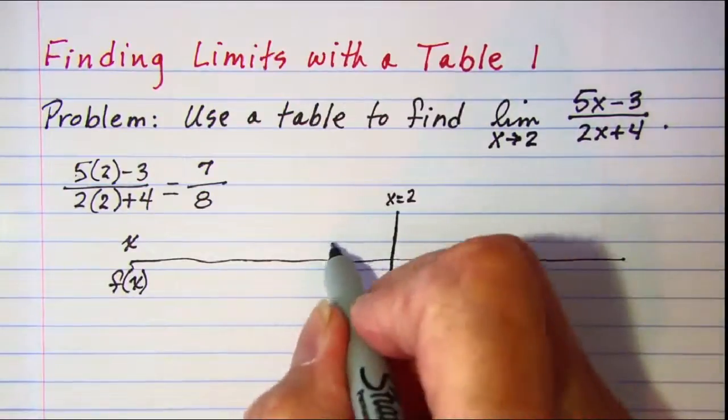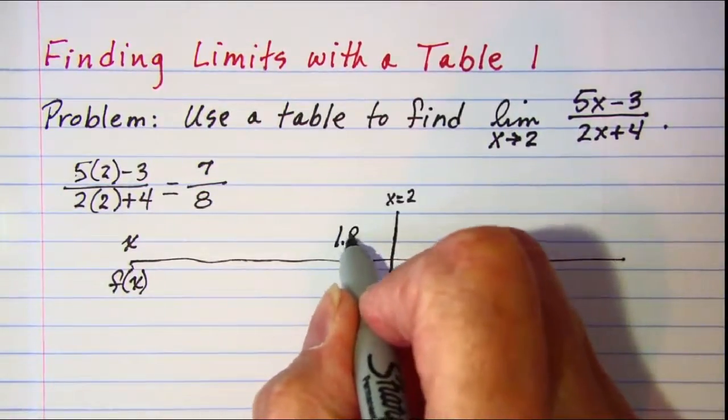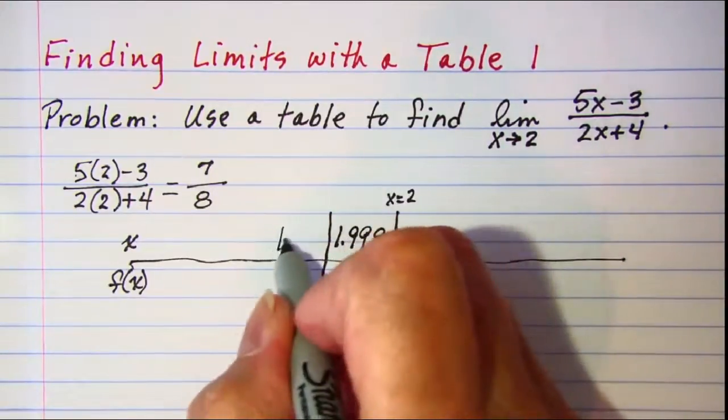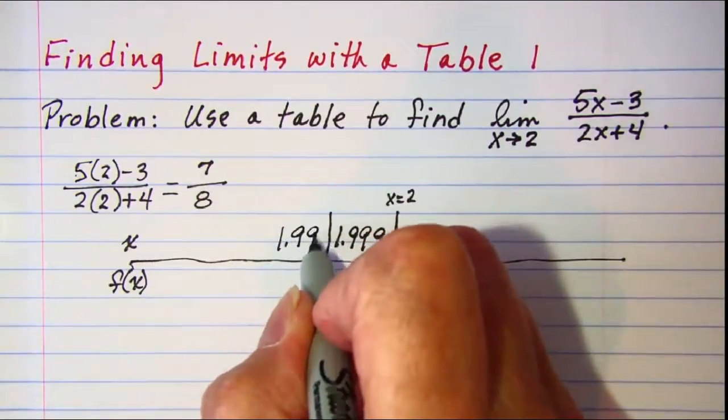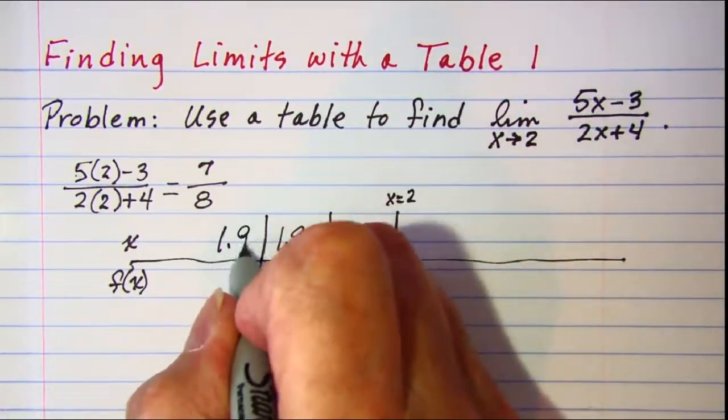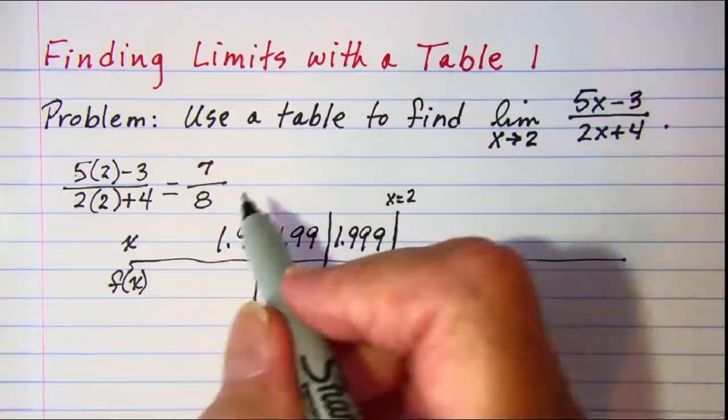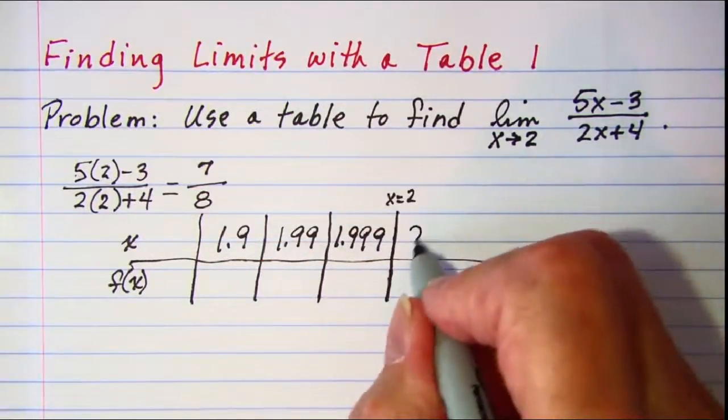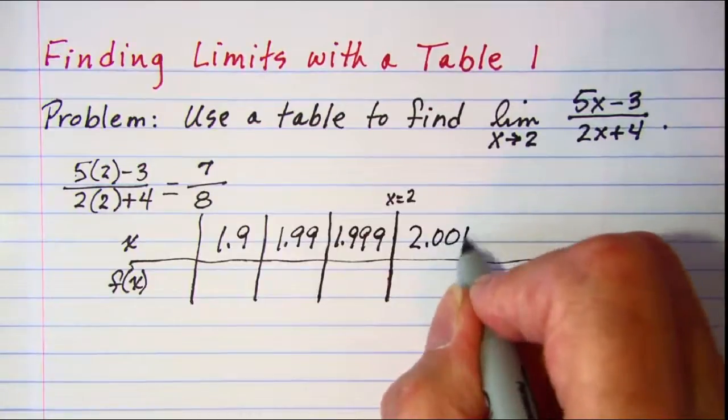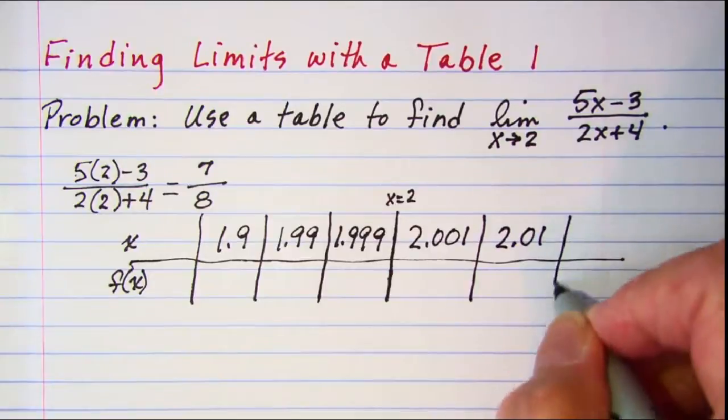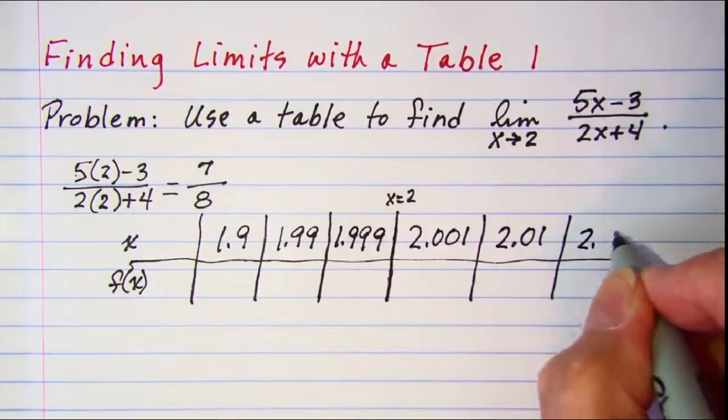So I'm going to use 1.999 and then 1.99 and then 1.9 and then going bigger we would have 2.001, 2.01 and 2.1.